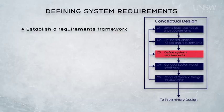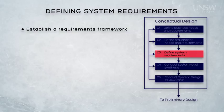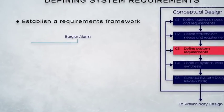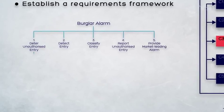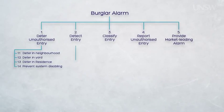A useful starting point for our requirements definition effort is to establish a requirements framework or a requirements breakdown structure. We've probably already established a requirements breakdown structure in the previous process where we were looking at stakeholder requirements. If it's already established, we can review, refine, and reuse that structure. If it hasn't already been established, then now's the time to get one in place. An example of a requirements breakdown structure, or what we call an RBS, for a burglar alarm, is illustrated.